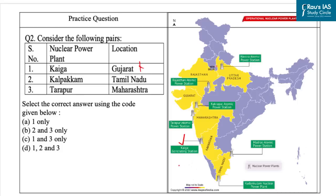The next one is Kalpakkam, or the Madras Atomic Power Station. It is a comprehensive nuclear power production, fuel reprocessing and waste treatment facility that includes plutonium fuel fabrication for fast breeder reactors. An important fact is that it is India's first fully indigenously constructed nuclear power station. This pair is correct, as Kalpakkam is in Tamil Nadu.